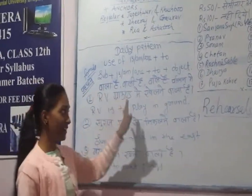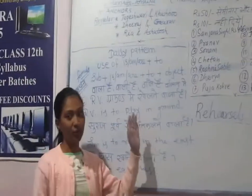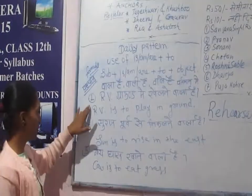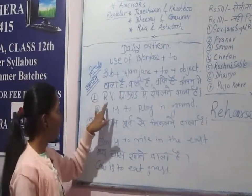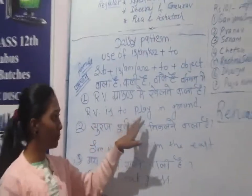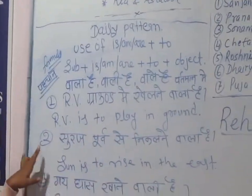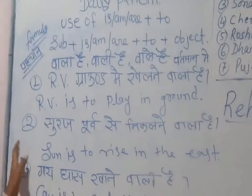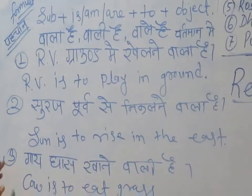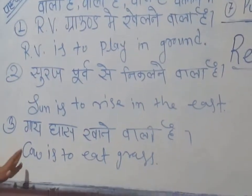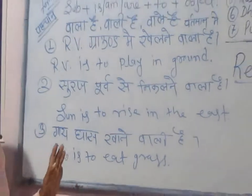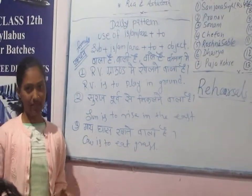Present tense examples: The first sentence — RV is to playing ground. The second — Sun is to rise under east, meaning the sun rises in the east. And the third — Cow is to eat grass, meaning the cow eats grass.